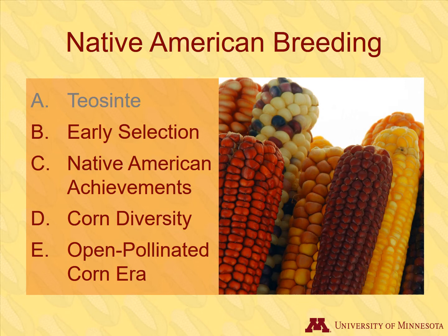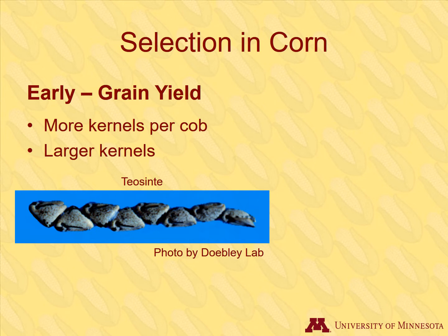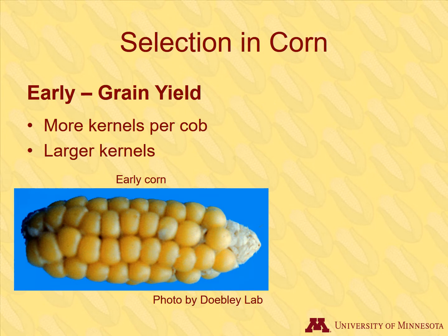The traits for which Native American breeders selected changed over time. In the beginning, early Native Americans primarily selected for larger yields such as more kernels per cob and larger kernels. Teosinte only had about 6 to 12 kernels per cob, but early corn had many more kernels that were somewhat larger.